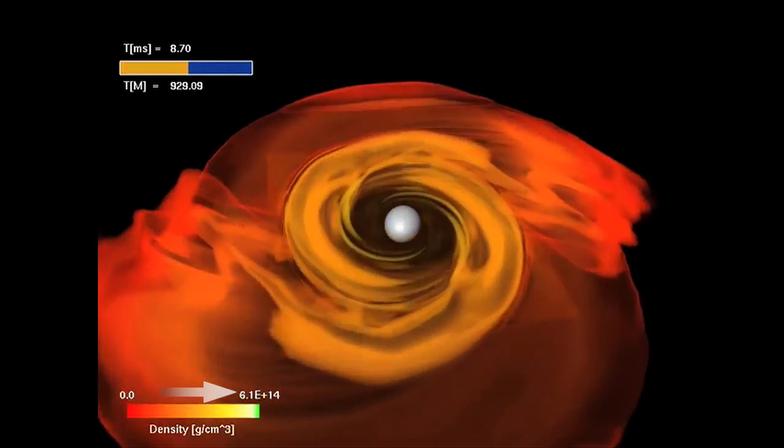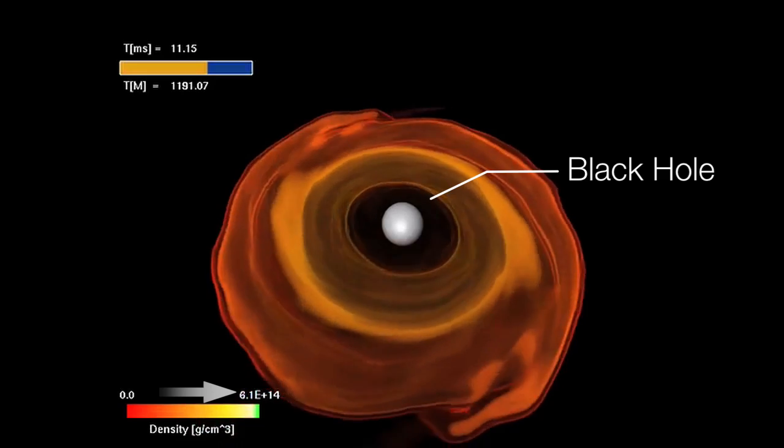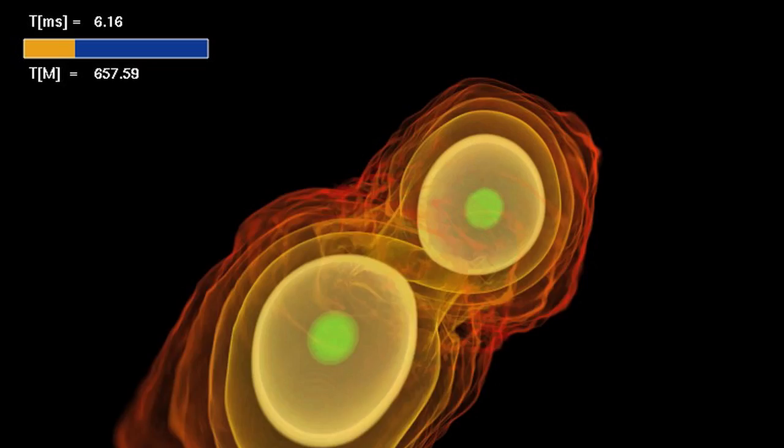Earlier simulations demonstrated that mergers could make black holes. Others had shown that the high-speed particle jets needed to make a gamma ray burst would continue if placed in the swirling wreckage of a recent merger.